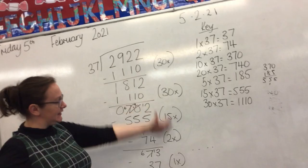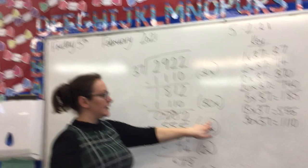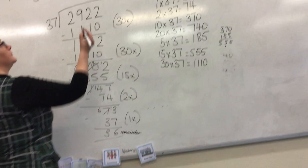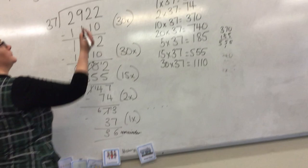But to get our answer - we're still not quite there yet - and I said these would come in handy, we add these up. So 30 add 30 is 60, add 15 is 75, add 2 is 77, add 1 is 78. Our remainder is 36 over 37. Ta da!